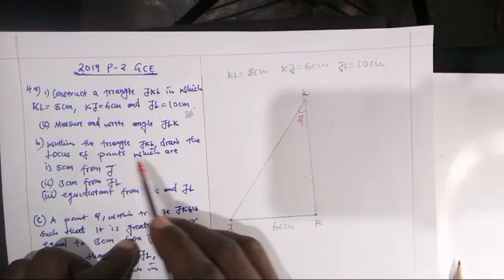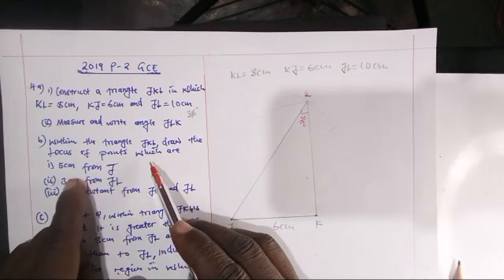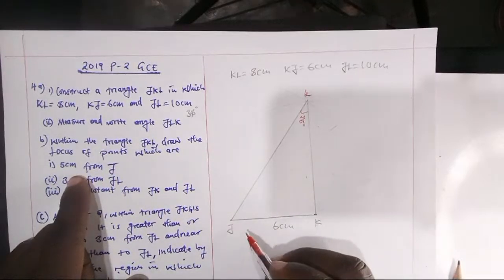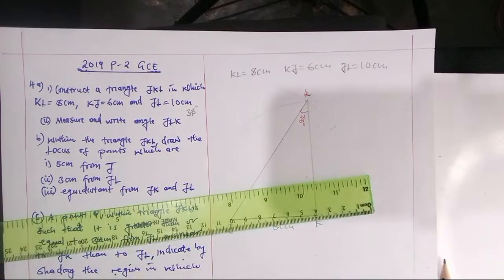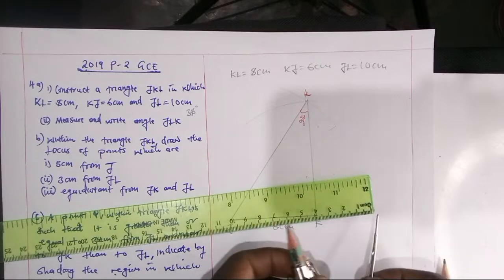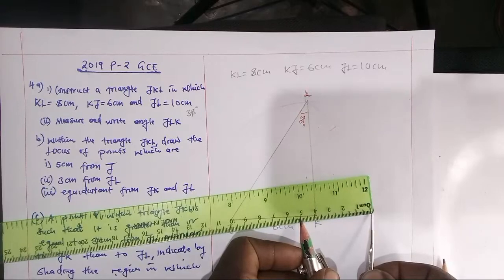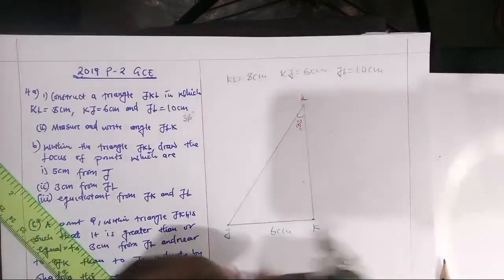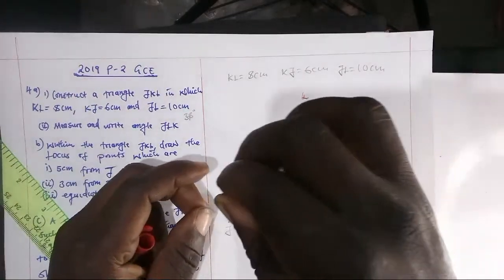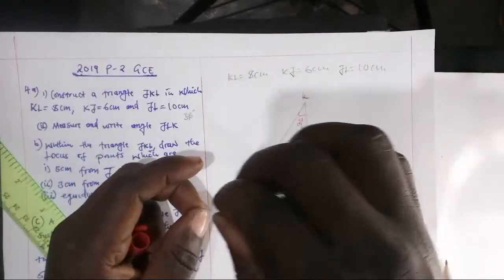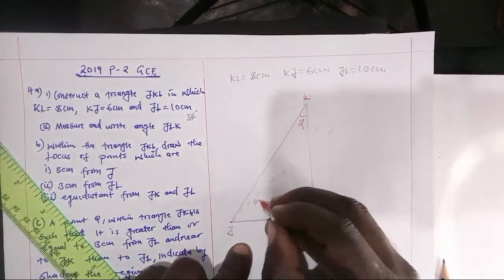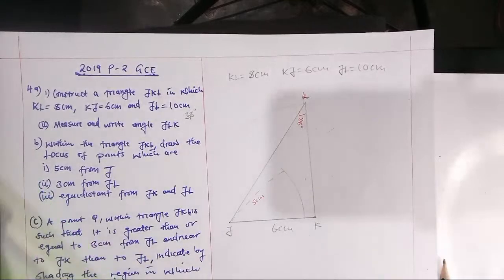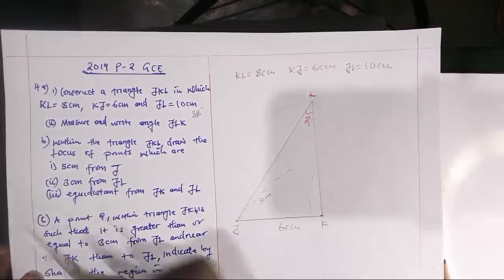For roman numeral two: within the triangle, draw the locus of points which are 5 centimeters from J. From J we measure 5 centimeters on the compass, then construct a circle with radius 5 centimeters centered at J. This circle represents the locus of points 5 centimeters from J.